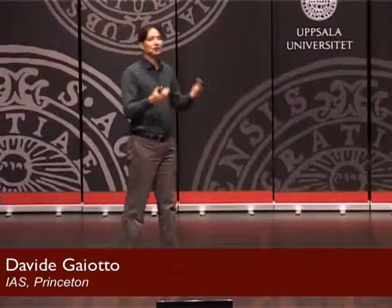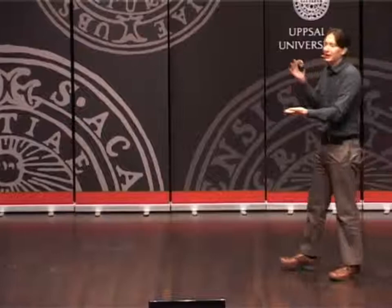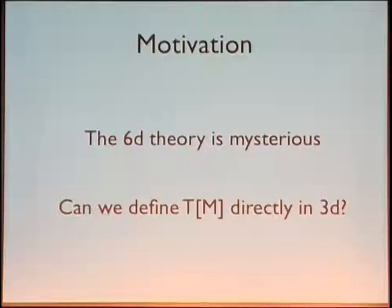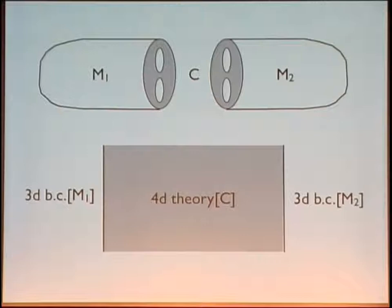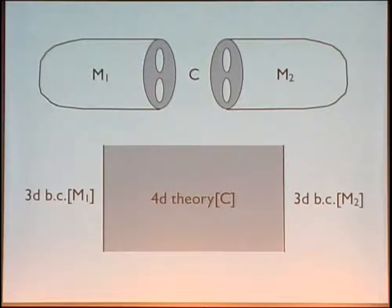One reason to believe this could be done is that we did it before for Riemann surfaces. Starting from the six-dimensional theory on a Riemann surface, you can chop the Riemann surface up into trinions, identify what four-dimensional theories correspond to each individual trinion, and then glue them back together. If we try to do something like that for a 3-manifold, you would chop it along Riemann surfaces, elongate it, and get a description of the three-dimensional theory as a four-dimensional theory on a segment, where in the bulk you find the theory associated to the Riemann surface you cut on.